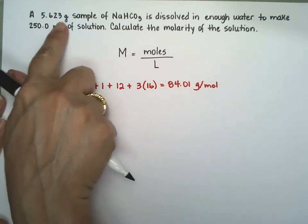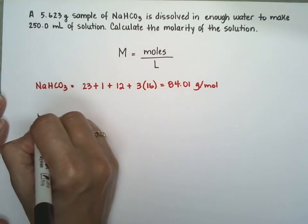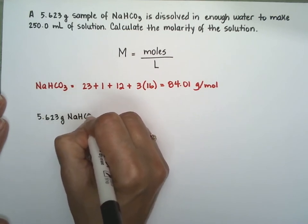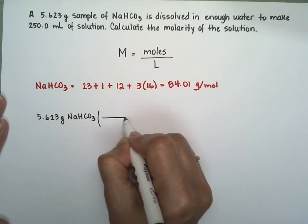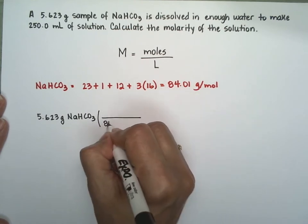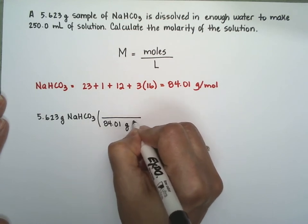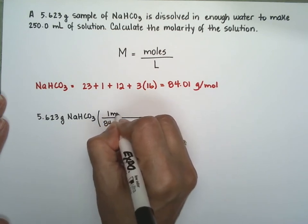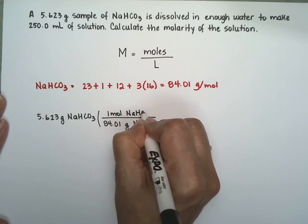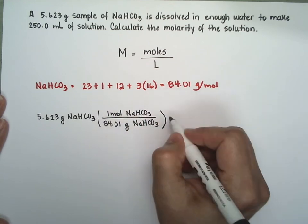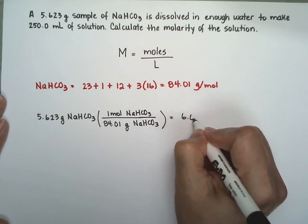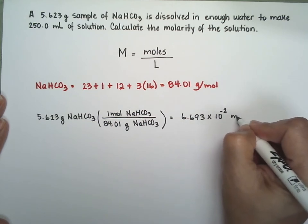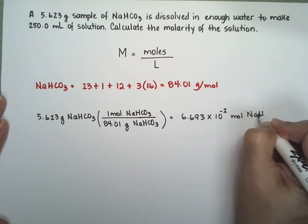And now we're ready to convert the sample to moles. 5.623 grams, I have to divide by the molecular weight. 84.01 grams is 1 mole. And that's pretty much it, 6.693 times 10 to the minus 2 moles of carbonate.